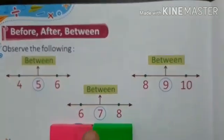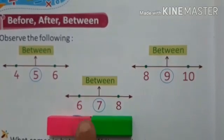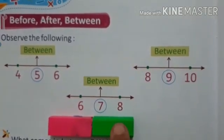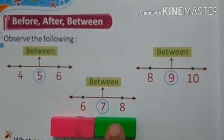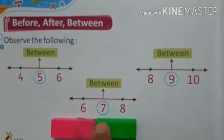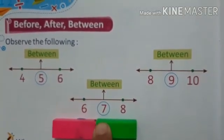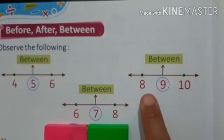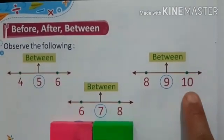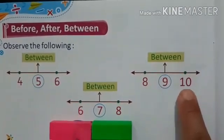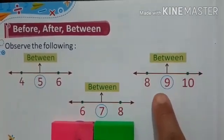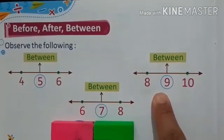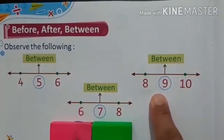See the next example. What is in between 6 and 8? That is 7. Very good. Here, what is in between 8 and 10? That is 9.